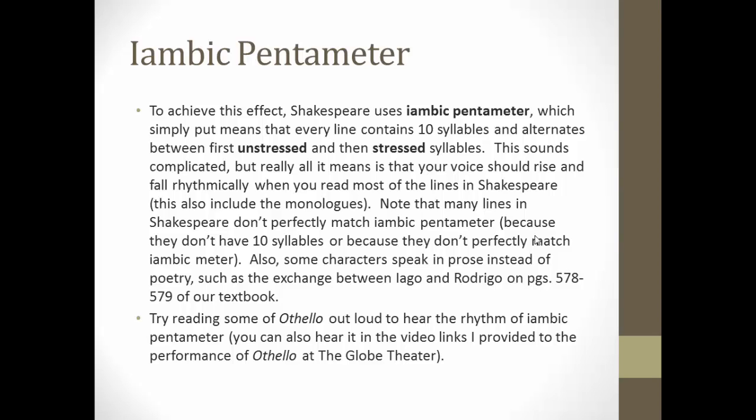This is what's called iambic pentameter — you read about this in Norton as well, and it's really crucial to understanding the style in which these plays were written. To achieve this effect of simulating natural speech, Shakespeare uses iambic pentameter — we also saw this in Chaucer and we're going to see it again in Milton — which simply means that every line contains 10 syllables and alternates between first an unstressed and then a stressed syllable. Your voice should rise and fall rhythmically when you read most of the lines in Shakespeare. Note that many lines don't perfectly match iambic pentameter, and that variation is often done intentionally to achieve different kinds of effects and to highlight certain lines or words.